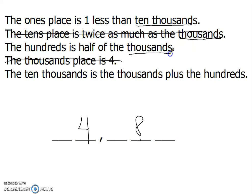I see another thousands we can do. Hundreds is half of the thousands, so what's half of four is two. And then now I'm looking, I've got ten thousands at the end, and I still don't have ten thousands. But I can probably do this one. Ten thousands is the thousands. That would be a four. Plus the hundreds, which is a two. So four plus two equals six.